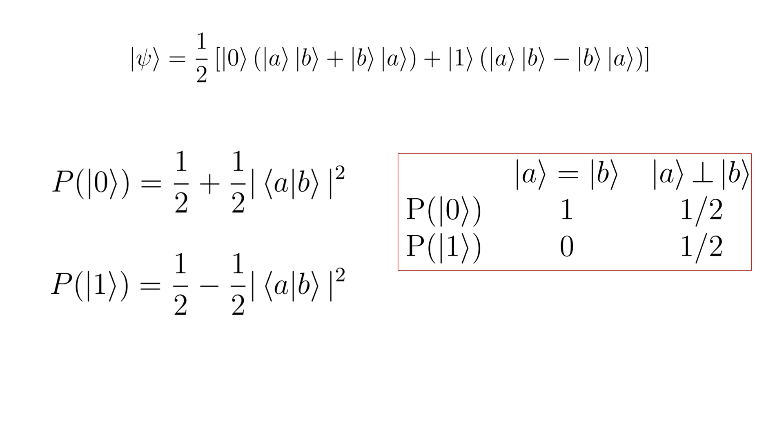So, if we measure an ancillary qubit in state 0 in 50% of cases, it shows that the two quantum states a and b don't overlap at all. In other words, they are orthogonal, while a probability of 1 indicates that they have maximum overlap.